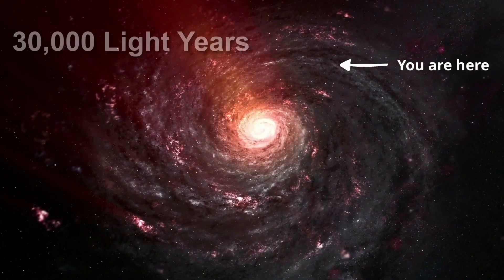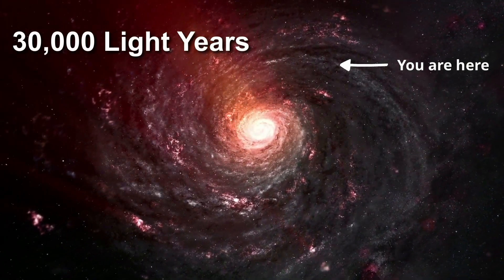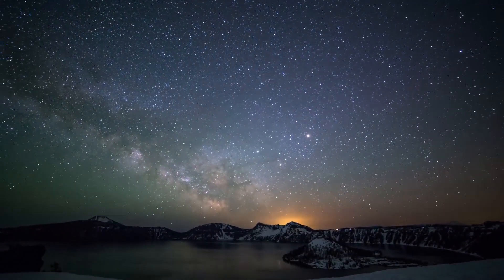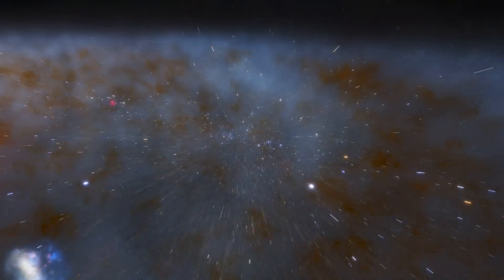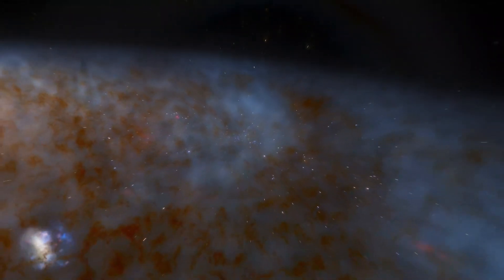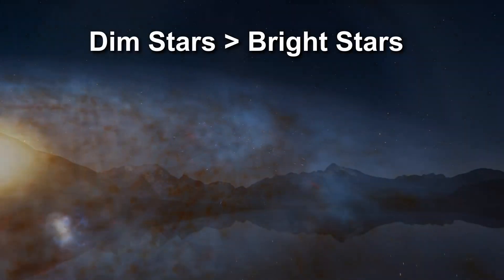Our solar system is located 30,000 light-years from the galactic center. As a result, stars are not evenly distributed across the sky. More stars are farther away from Earth than nearby, so there are more dim stars in the night sky than bright ones.